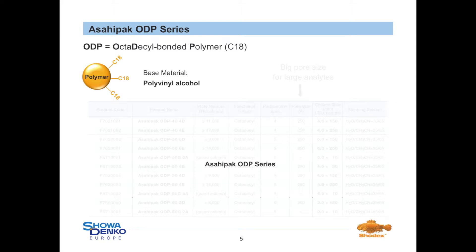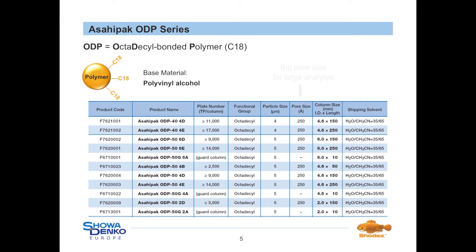We offer this type of reversed-phase column in different column dimensions ranging from semi-preparative, analytical to semi-micro scale. The latter is commonly used for LC-MS applications. Furthermore, the stationary phase has a quite large pore size of 250 Ångström, which makes it suitable for the separation and analysis of peptides and small proteins up to approximately 20,000 Dalton. You can find more detailed information in our catalogue or on our website.